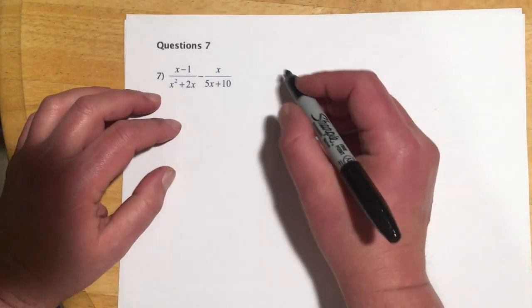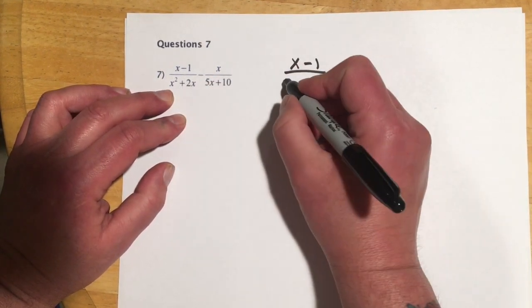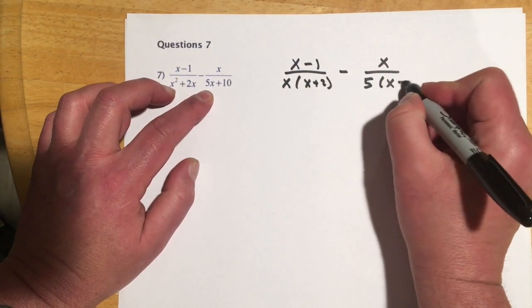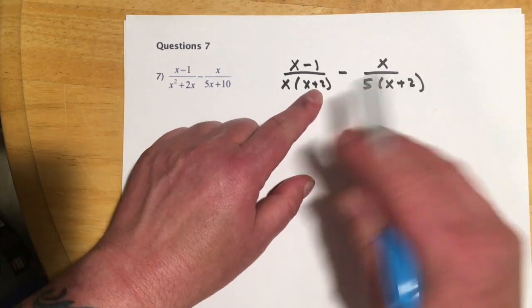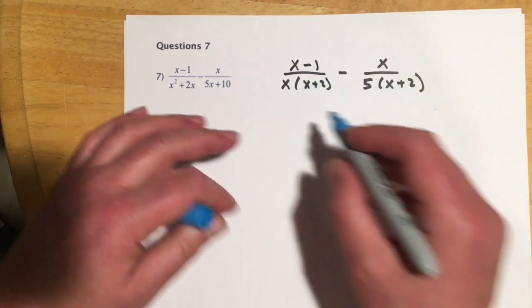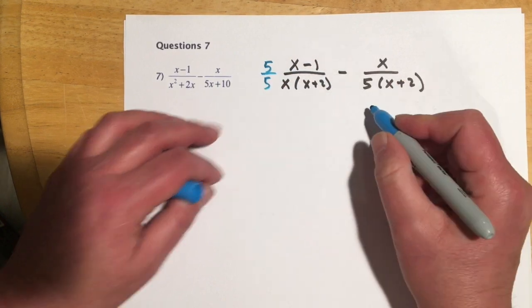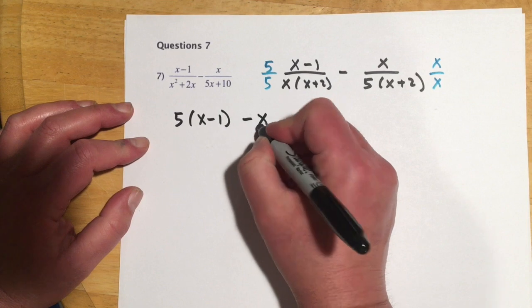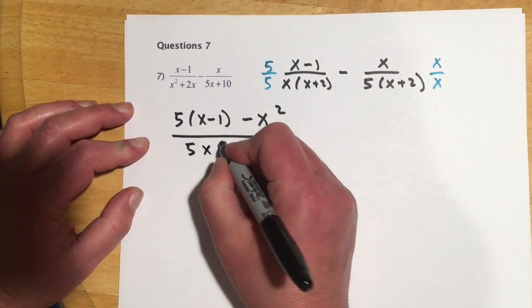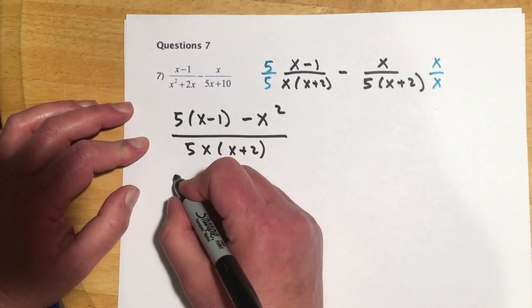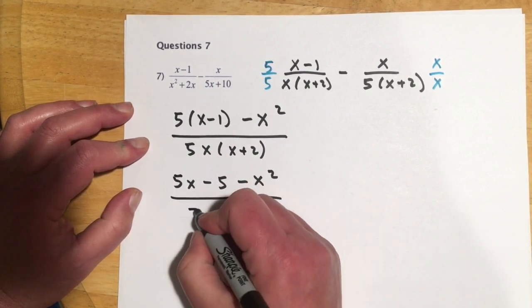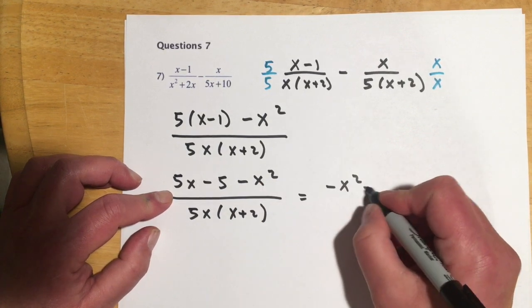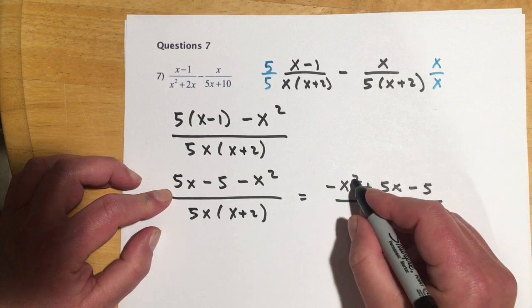Example 7 is the one to try in class. Factor first: the first denominator gives (x-1)(x+2) and the second has a factor of 5 giving 5(x+2). Both share (x+2), so the LCD is 5x(x+2). The first fraction is missing the 5, and the second is missing the x. That gives us 5(x-1) minus x·x, which is x², over 5x(x+2). Distributing: 5x-5-x² over 5x(x+2), or rewritten in descending order: -x²+5x-5 over 5x(x+2).